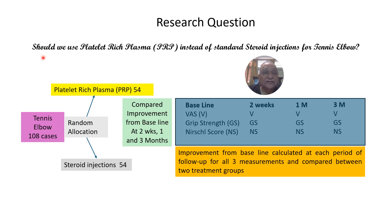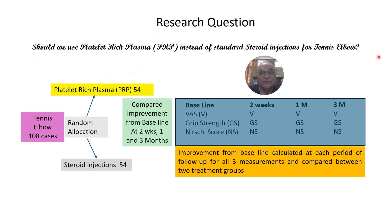Here is the research question: should we use platelet-rich plasma instead of standard steroid injection for tennis elbow? Platelet-rich plasma costs about 6,000 rupees if given at PIMS, whereas a steroid injection costs less than 600 rupees. So should we really use platelet-rich plasma for tennis elbow, in patients who can afford it? We took 108 cases of tennis elbow and randomly allocated them to the platelet-rich plasma group and the steroid injection group.